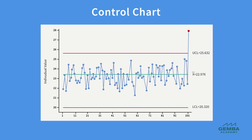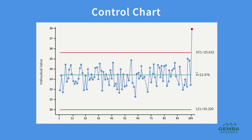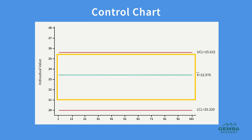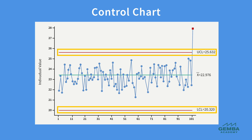One of the key features of SPC is the use of control charts to quickly recognize variation that requires our attention. Control charts are a cornerstone of statistical process control because they provide a visual and analytical means to monitor the stability and performance of a process over time. By plotting data points in chronological order and establishing control limits, control charts allow organizations to identify variations quickly, helping distinguish between common cause variation — inherent to the process and usually not requiring immediate corrective action — and special cause variation, which are anomalies indicating the process is out of control and requires urgent intervention.